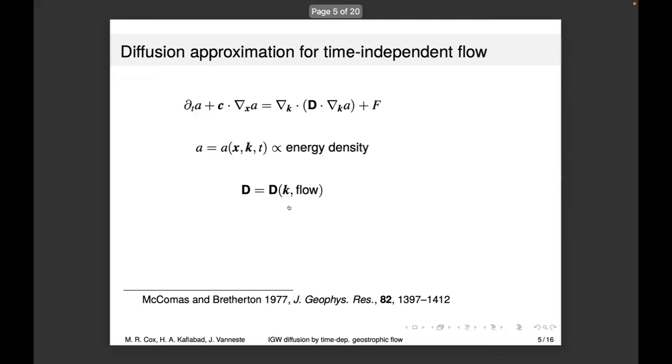This scattering process, in the regime of very slow flow compared to the waves, is described by a diffusion equation for action in wave vector space. A is the action, C is the group velocity of the waves, F is some forcing, and D is the diffusivity, which captures the effects of the flow on the waves—it's a flow-dependent tensor. We can use this to find the energy density of the waves.